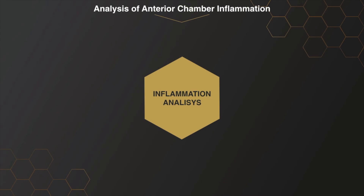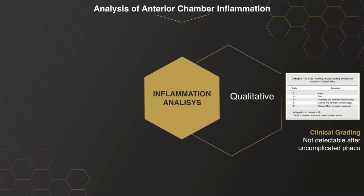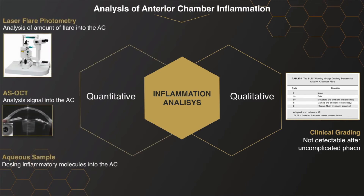Anterior chamber inflammation is routinely evaluated by grading cells and flare at the slit lamp according to the standardized uveitis nomenclature system, which is qualitative and relies on subjective evaluation. Recently, new technologies have been developed to quantify anterior chamber inflammation objectively, such as laser flare and cell photometry, anterior segment optical coherence tomography, and modern techniques of aqueous sample analysis.